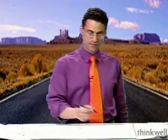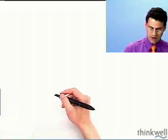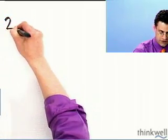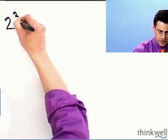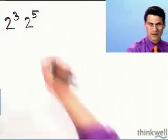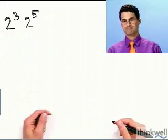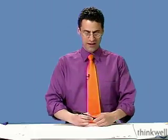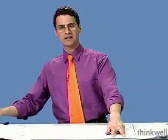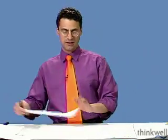Let's start off with a very simple arithmetic question. Suppose I wanted to figure out what 2 cubed times 2 to the fifth is. How would I do that? What do you do with those exponents? Do you add them? Do you subtract them? Do you multiply them? Divide them?